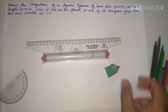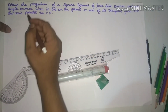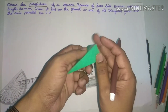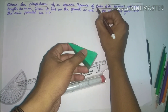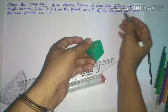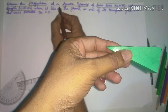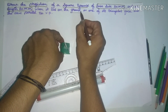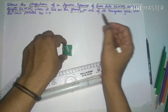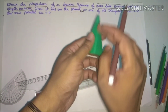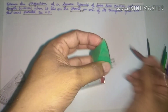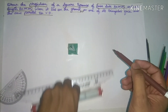Hi friends, welcome to Variety Tech. We have a square pyramid problem. The base side is 30mm, the axis length is 60mm. It lies on the ground, that is the horizontal plane, with one of its triangular faces on the ground and the axis parallel to the VP. We will see the front view and top view.